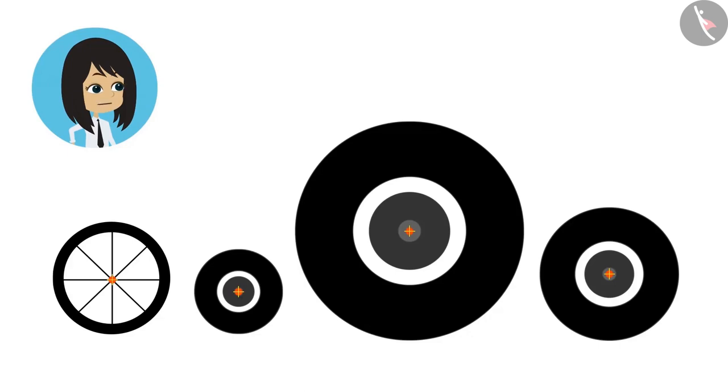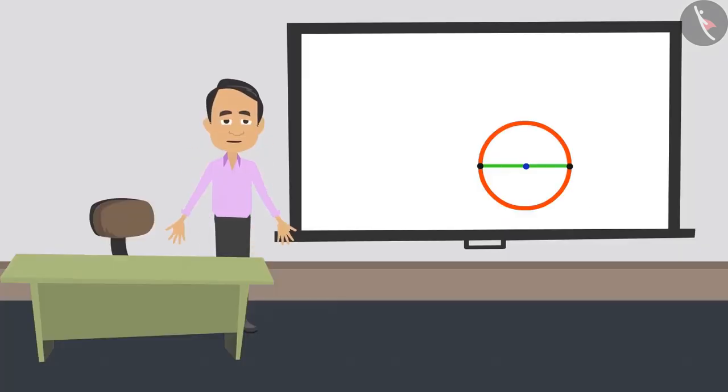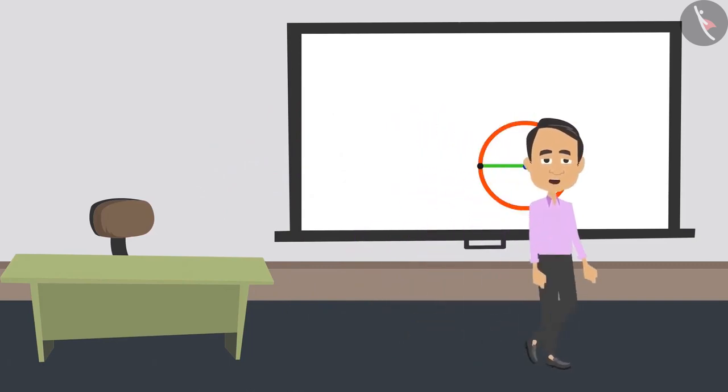If we measure the diameter of all the wheels, then we can tell the difference between the wheels. Absolutely right. But before that, you should know another property of a circle.